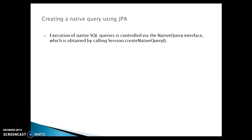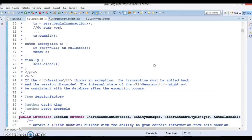Hibernate also allows you to specify handwritten SQL, including stored procedures and functions, for all create, update, delete, and retrieve operations. To run native SQL, we create a native SQL query using JPA and Hibernate. Since Hibernate is one implementation of JPA, features supported by JPA are of course supported by Hibernate. Execution of native SQL queries is controlled via the NativeQuery interface, obtained by calling session.createNativeQuery.